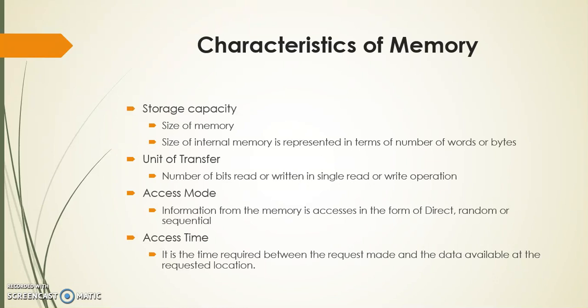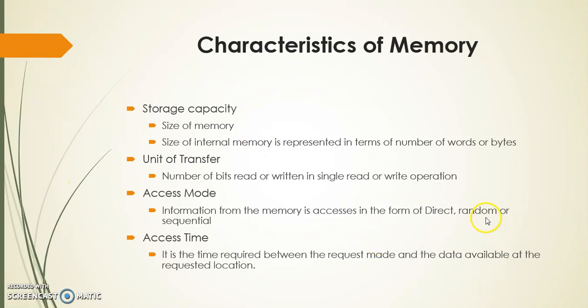Next is access mode. As we saw in lecture one, there are three types of access mode: direct access, random access, and sequential access. The access mode describes in what way we are going to access data from memory — whether the information is accessed in a direct, random, or sequential manner.